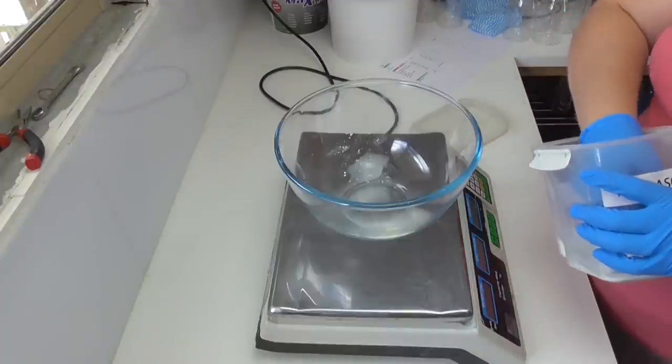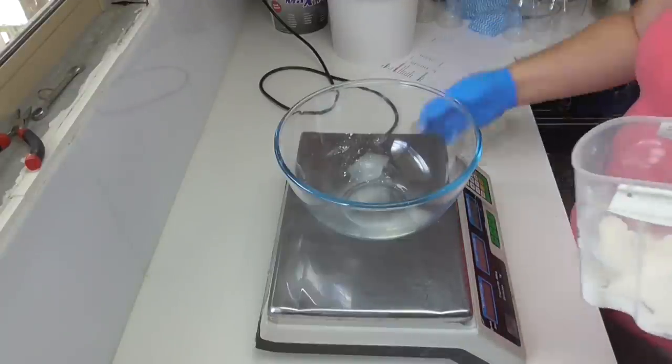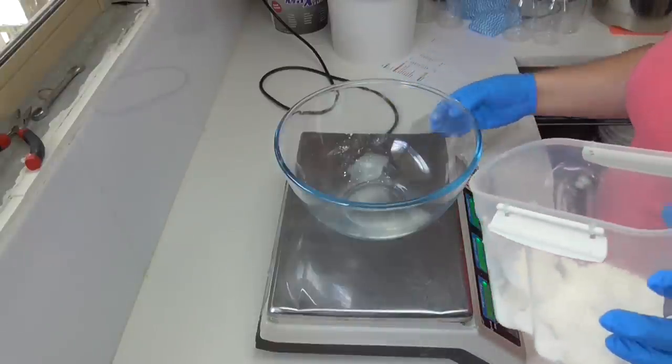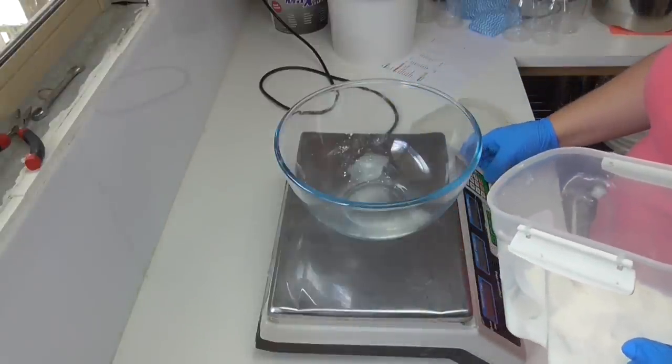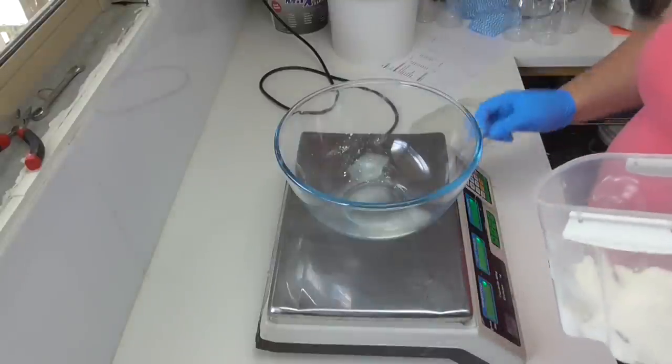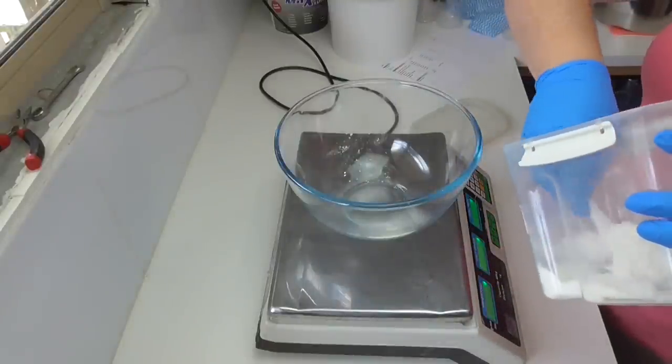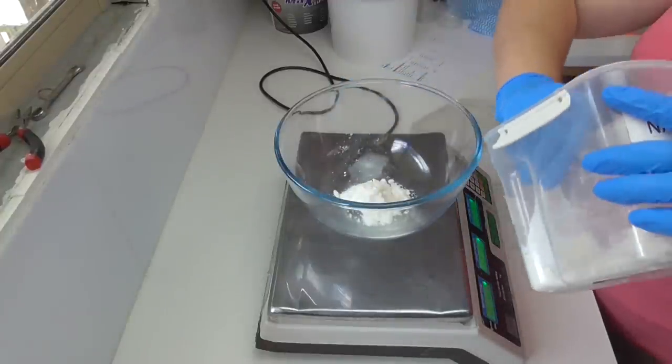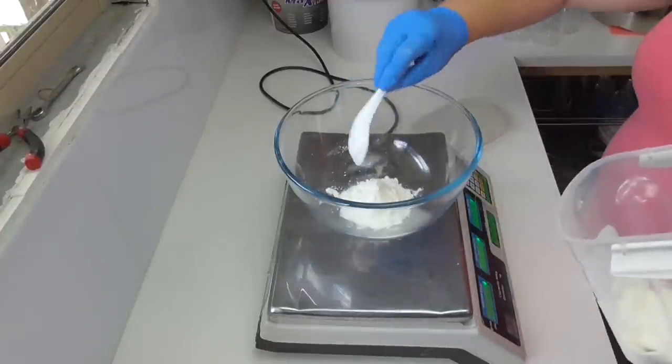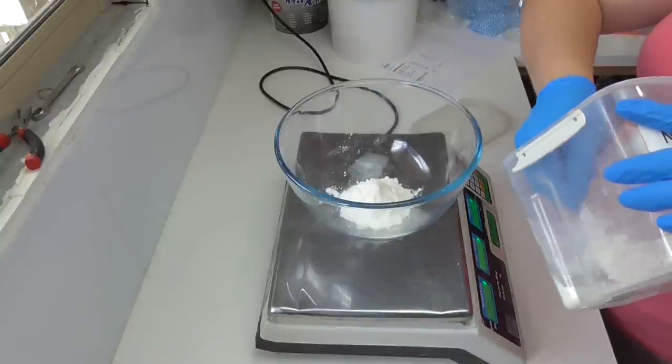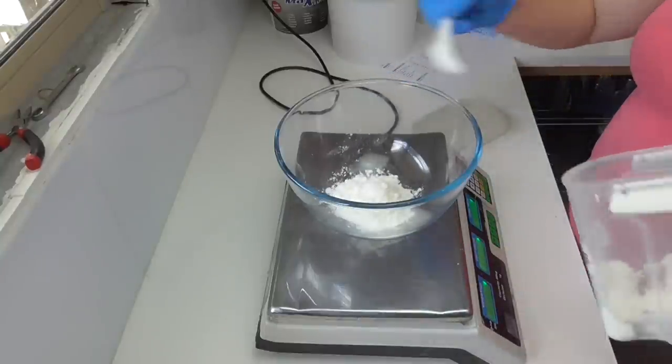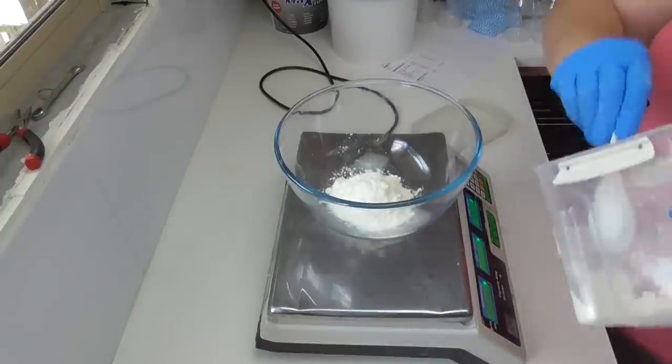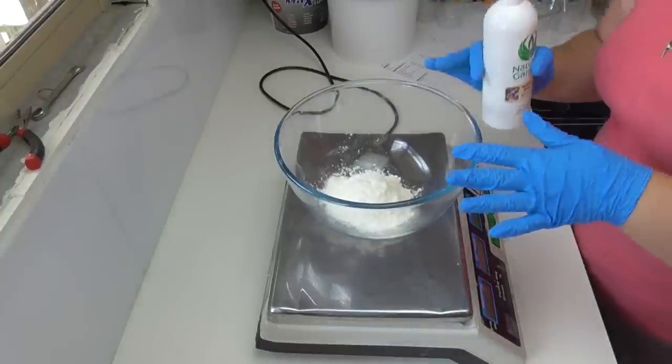The first thing I'm going to add into my bowl here is some natrasorb. The natrasorb is a tapioca starch which has been very finely ground and it can hold any wet liquids in a dry format. This is really handy when you are adding into salts so that you aren't making your salts all wet, which will eventually dissolve down if they are wet.